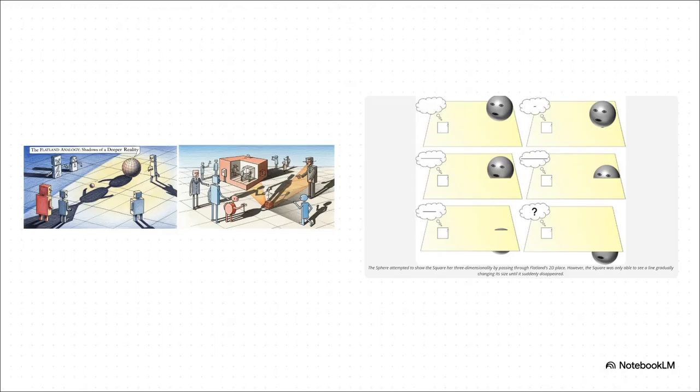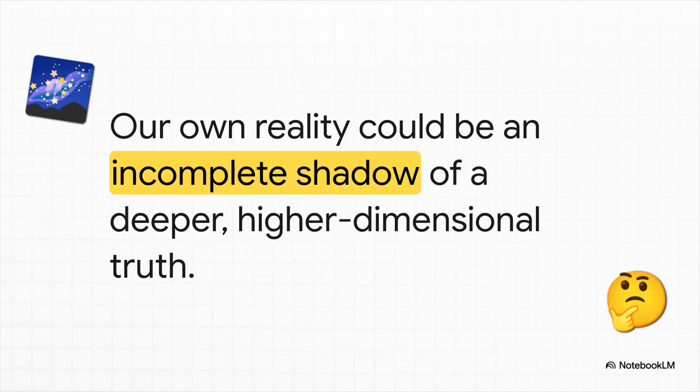Now, here's where it gets interesting. What happens if a 3D object, say a simple sphere, passes through their 2D world? Well, the flatlanders wouldn't see a sphere, right? What they'd see is a single point just appearing out of thin air. Then that point would grow into a circle, get bigger and bigger, then shrink back down to a point and poof, gone. To them, it would look like some kind of magic, something totally impossible.